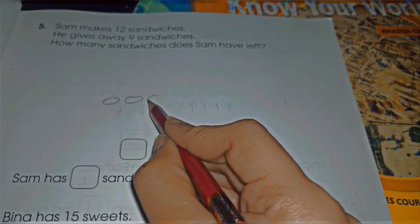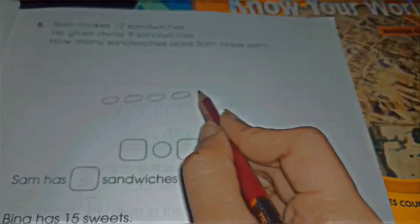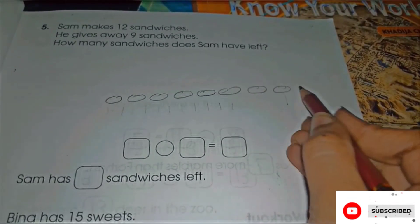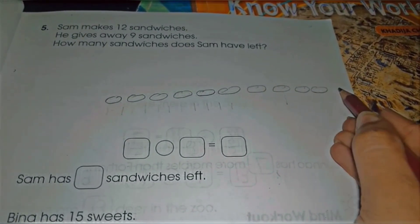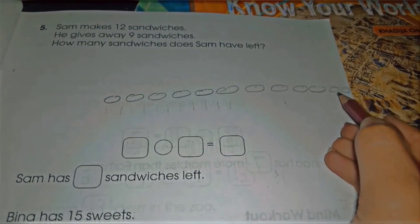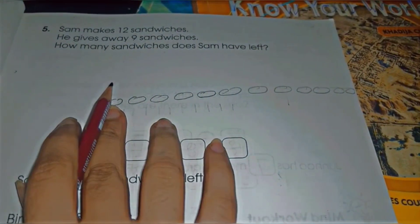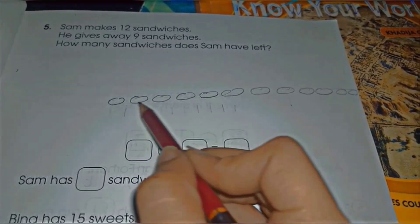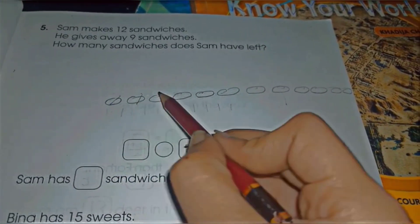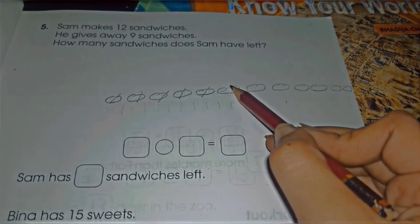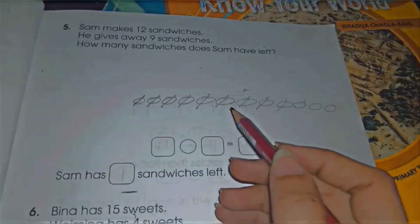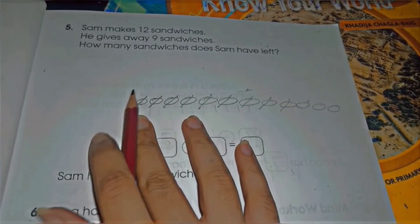1, 2, 3, 4, 5, 6, 7, 8, 9, 10, 11, 12. So these are the 12 sandwiches, right? He gives away 9 sandwiches: 1, 2, 3, 4, 5, 6, 7, 8, 9. So you can see he gives 9 sandwiches.